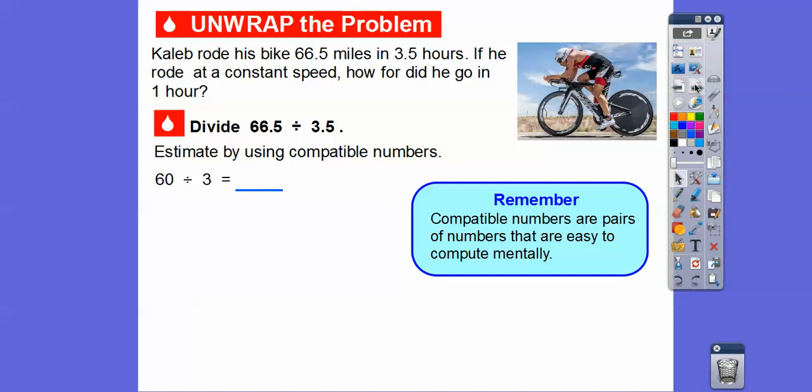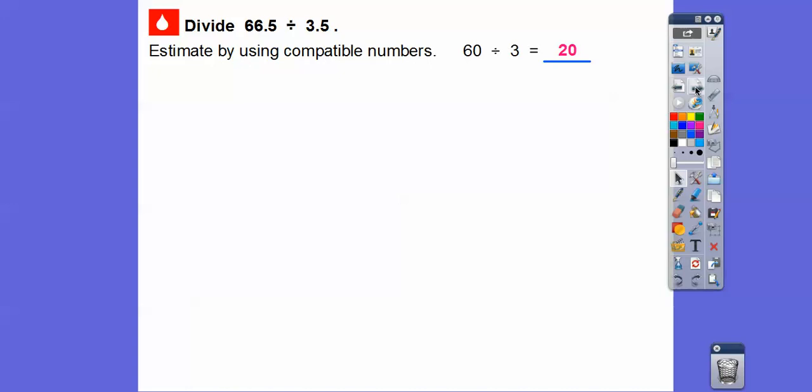Let's estimate by using compatible numbers. Remember, compatible numbers are pairs of numbers that are easy to compute mentally. So 66 is close to 60 and this is close to 3. 60 divided by 3 is going to be close to 20. So as long as we get an answer that's close to 20, then we should be good.